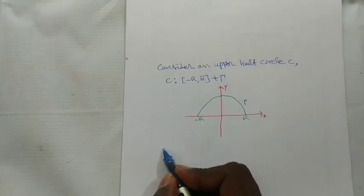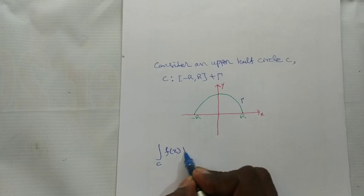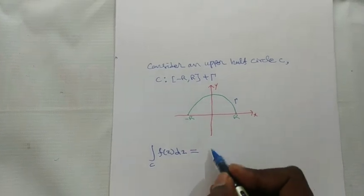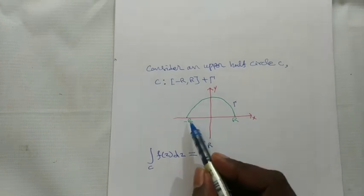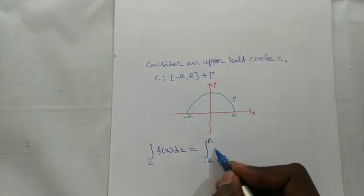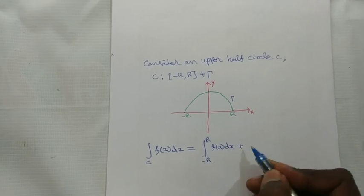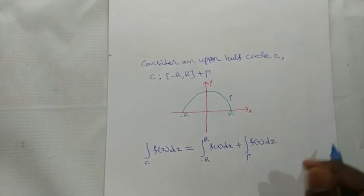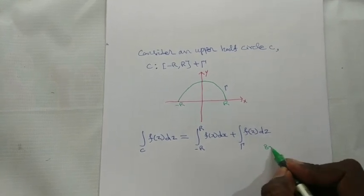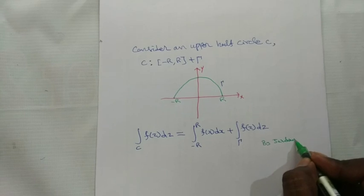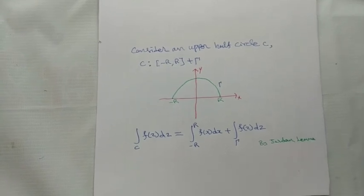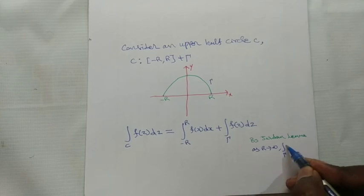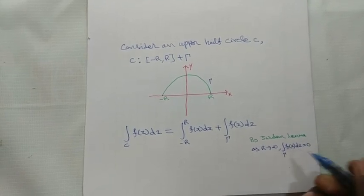From the diagram, the integral over C of f(z) dz represents the entire half-circle. It equals the integral from −R to +R of f(x) dx plus the integral over gamma of f(z) dz. By Jordan's Lemma, as R tends to infinity, the integral over gamma of f(z) dz equals 0.